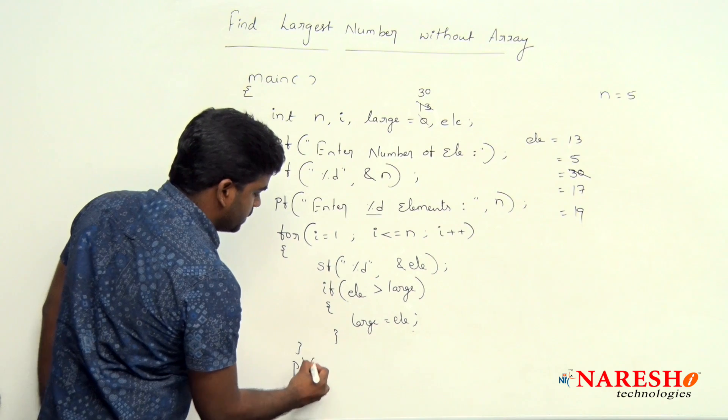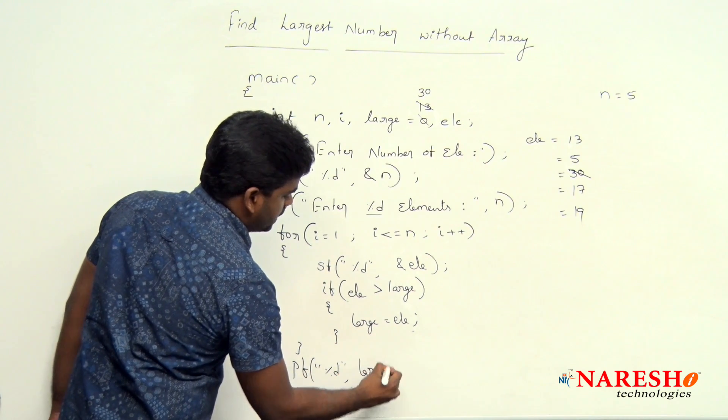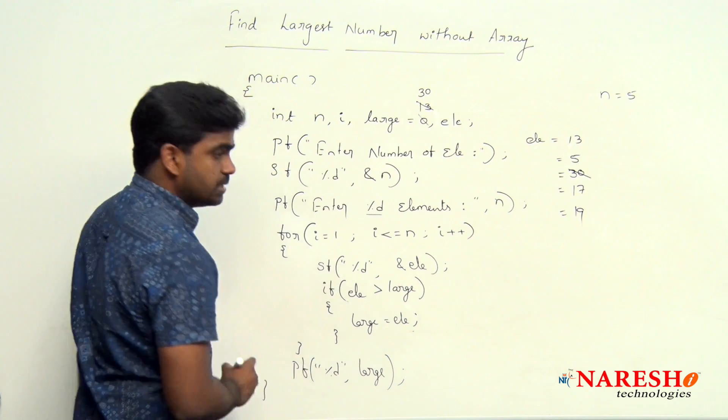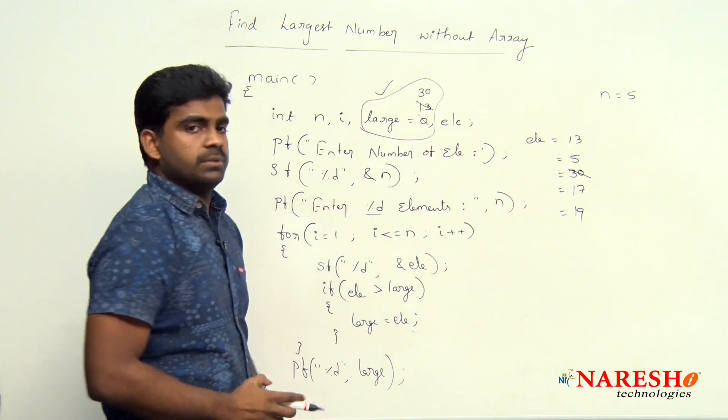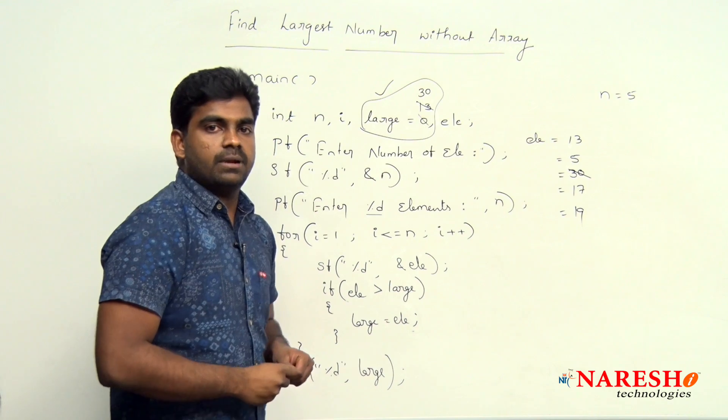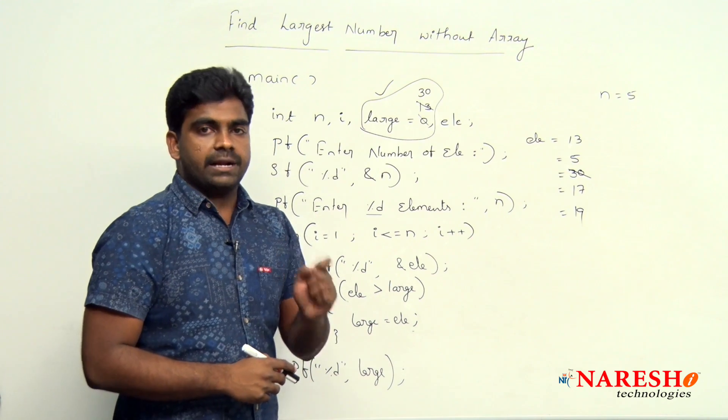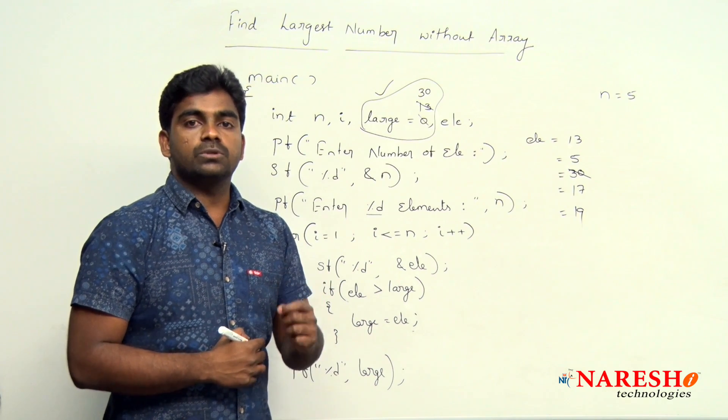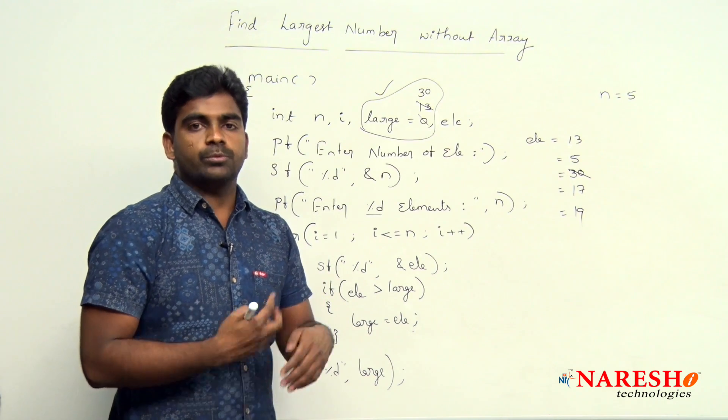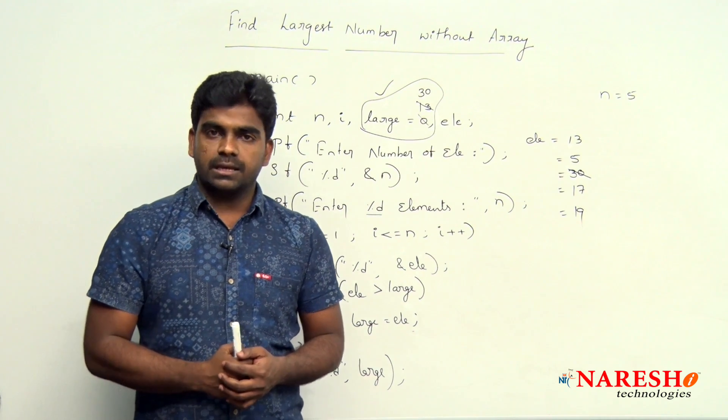And finally print percentage d, that large element we are printing, because large element already contains that largest element from the list. So this is how to find the largest element from the given input values without using arrays concept. Hope you understood. For more videos, please subscribe to Nareesh IT channel. Thank you.